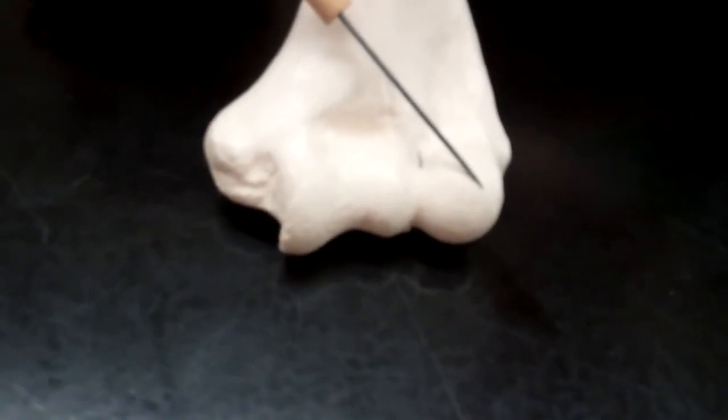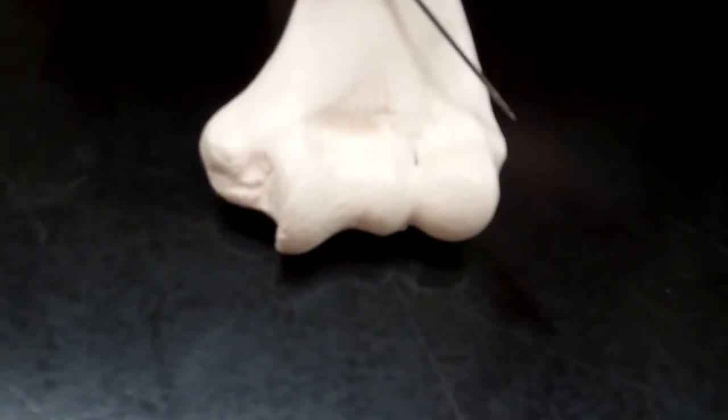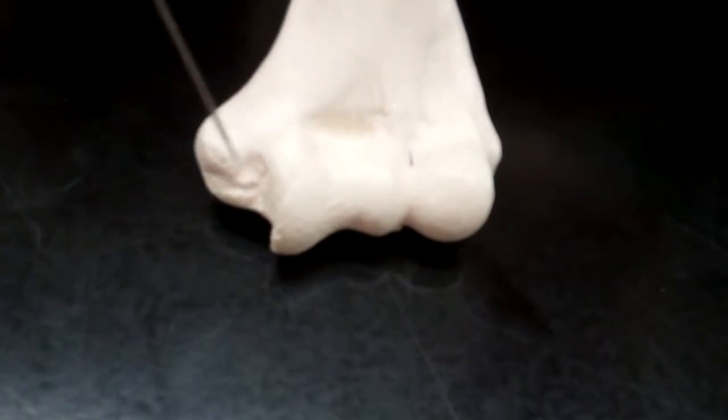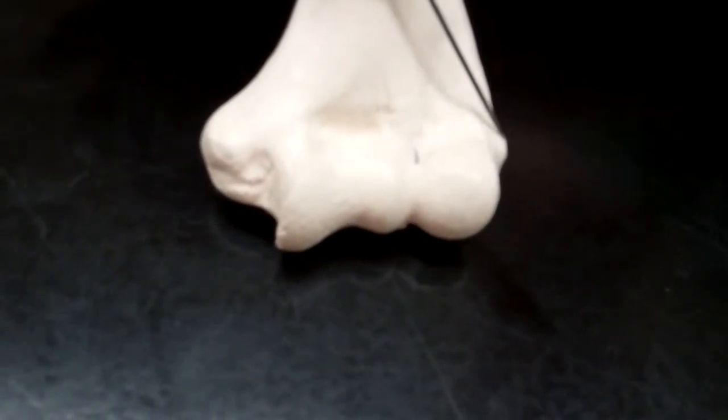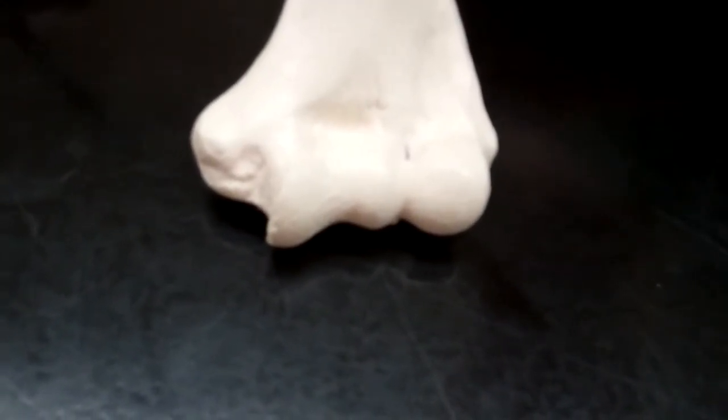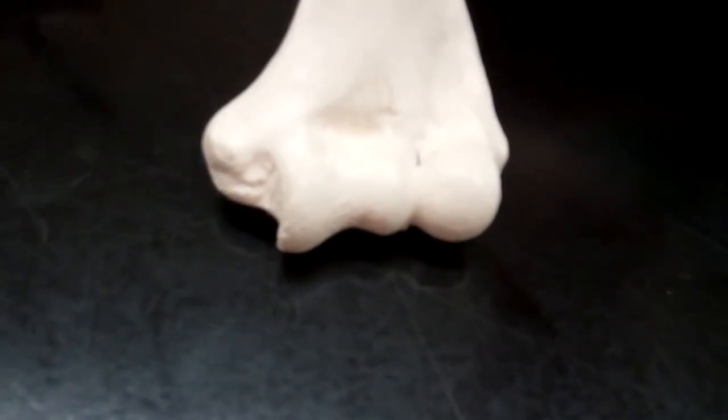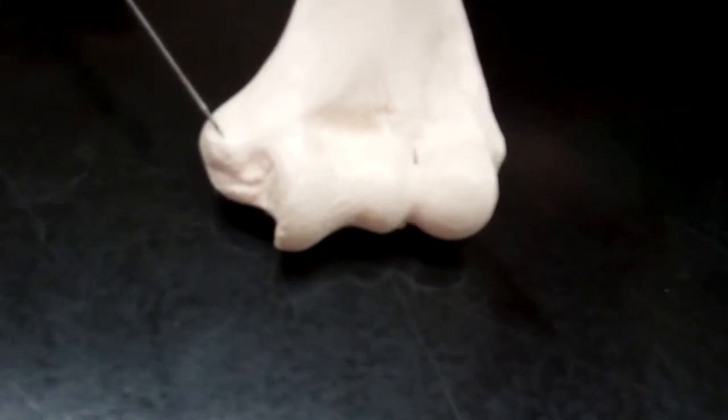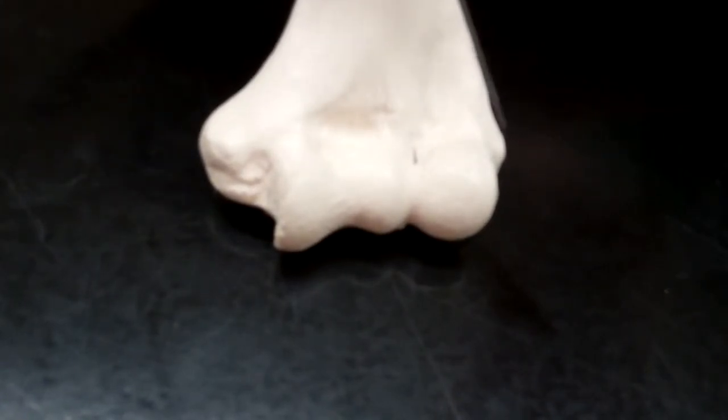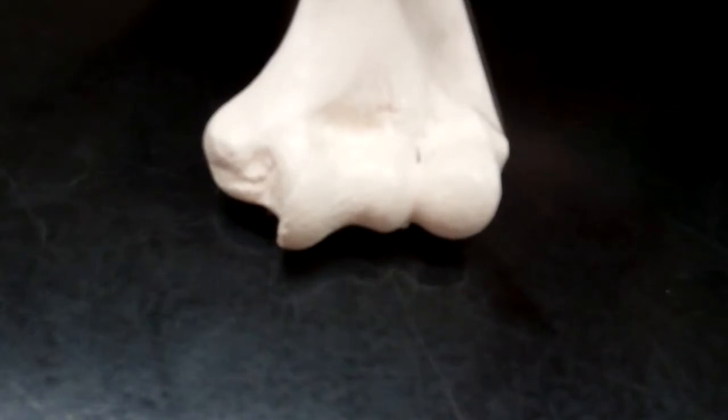Now there are also two smaller bumps you can see that are just above the capitulum and the trochlea. These are called epicondyles. Epi is always going to mean above. So the epicondyle on the side with our trochlea is going to be our medial epicondyle. And then on our lateral side, we have the bump. That's our lateral epicondyle.